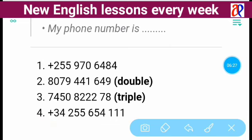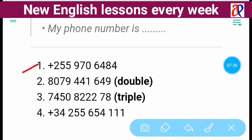Let's read all the examples again. Fourth example: plus three four two five five six five four one one one, or plus three four two double five six five four triple one. Third example: seven four five zero eight triple two seven eight, or seven four five zero eight two two two seven eight. Second example: eight zero seven nine four four one six four nine, or eight zero seven nine double four one six four nine. First example: plus two double five nine seven zero six four eight four, or plus two five five nine seven zero six four eight four.